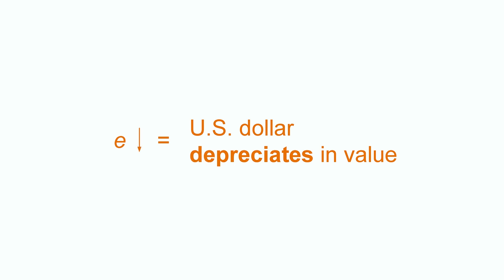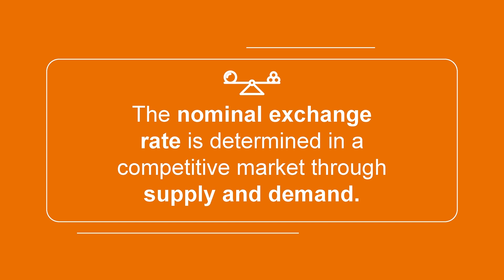Conversely, when E decreases, the US dollar depreciates in value. An E lower than 100 means that the same US dollar gets you less than 100 yen now, hence the US dollar is worth less. So how is the nominal exchange rate determined? Just like a lot of other economic variables, the nominal exchange rate is determined in a competitive market through supply and demand. You can think about the nominal exchange rate as the price of currencies, so supply and demand for that currency will determine its price. The market in which currencies are traded is called the foreign exchange market, or forex market.